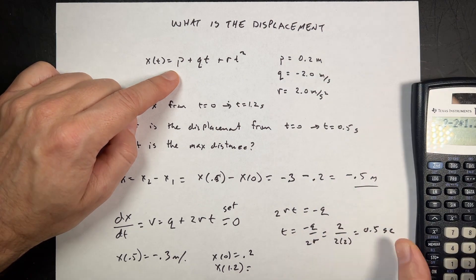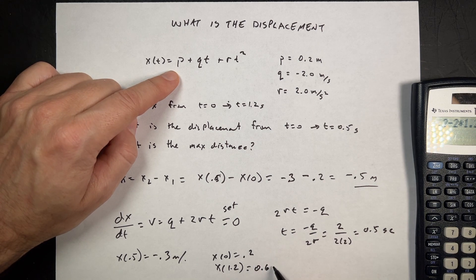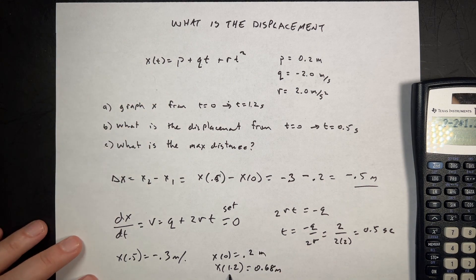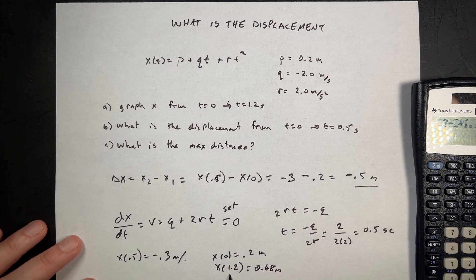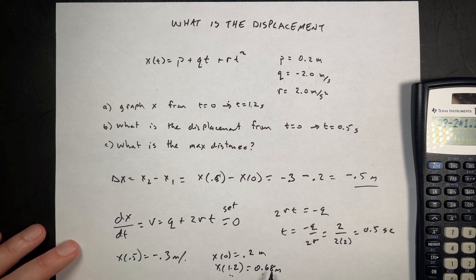And I get 0.68 meters. So the furthest it gets away during the time interval is at 1.2 seconds and a distance of 0.68 meters. Boom.